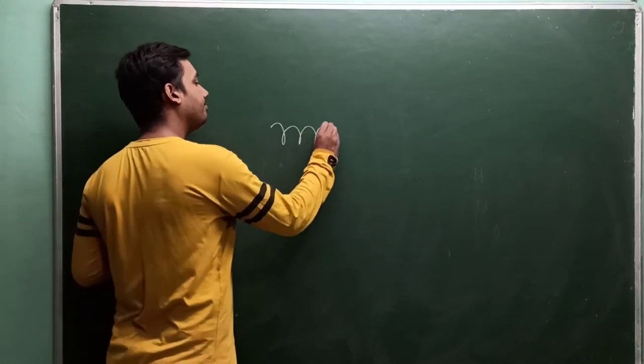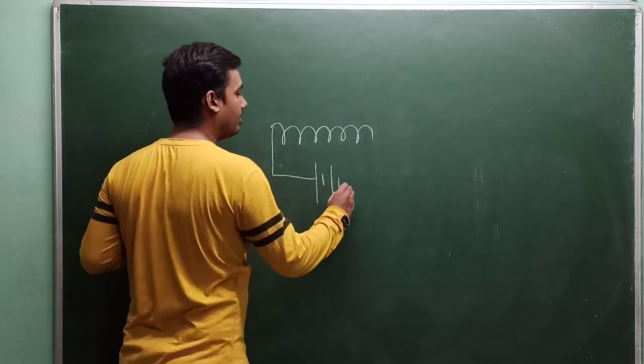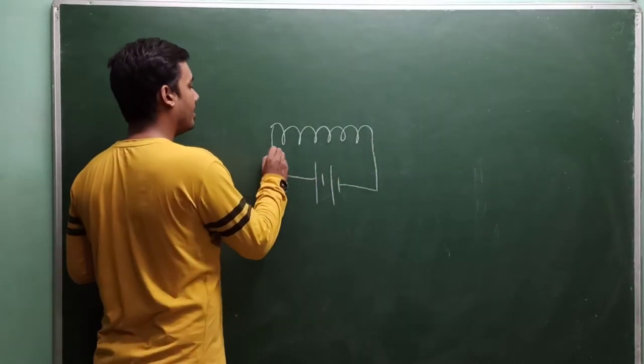Suppose that this is a solenoid. And in this solenoid, you just suppose that the current is this way.